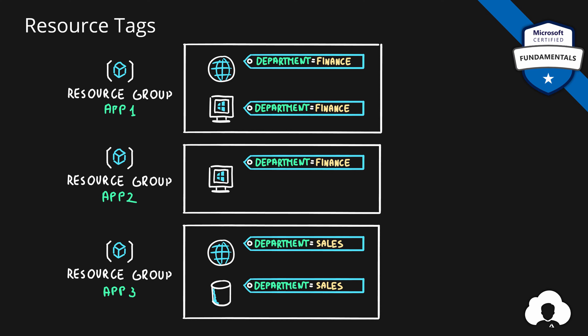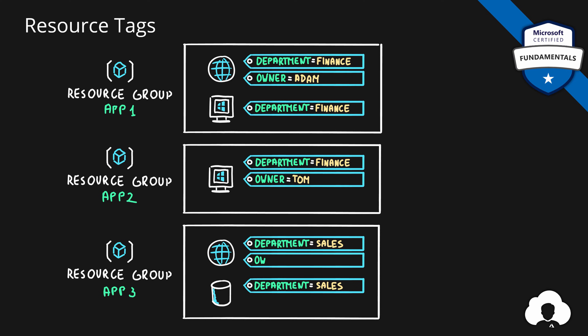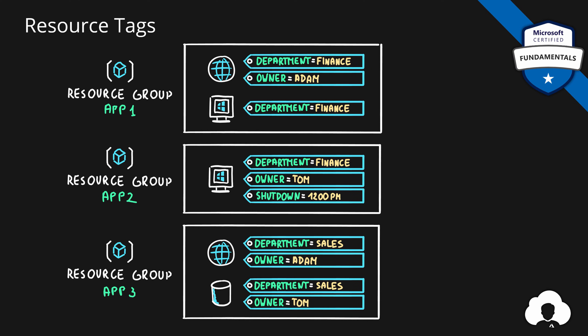What is great about resource tags is that you can assign multiple tags to a single resource. For example, you can add owner information — a person who should be contacted whenever an inquiry is required about a specific resource. You can also use tags to do some automation, for example assigning a shutdown time on a specific virtual machine and then creating scripts which will leverage this information to perform your automation tasks.